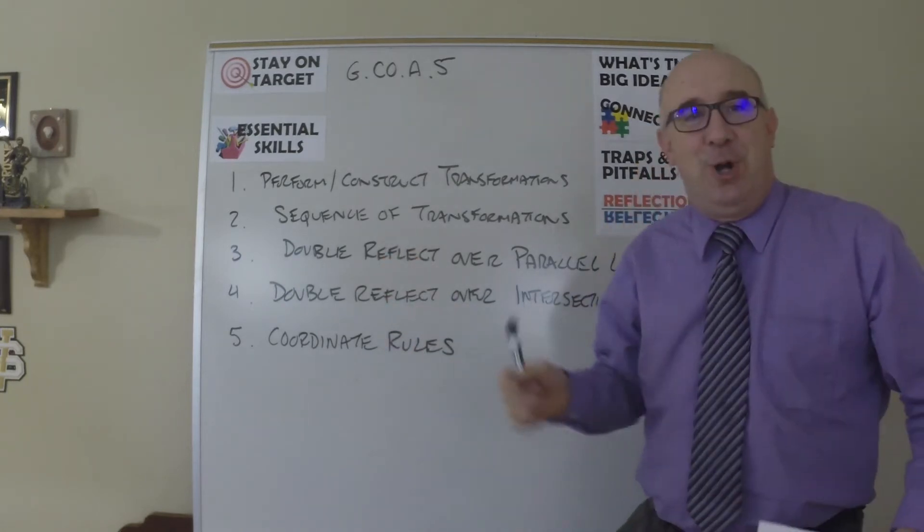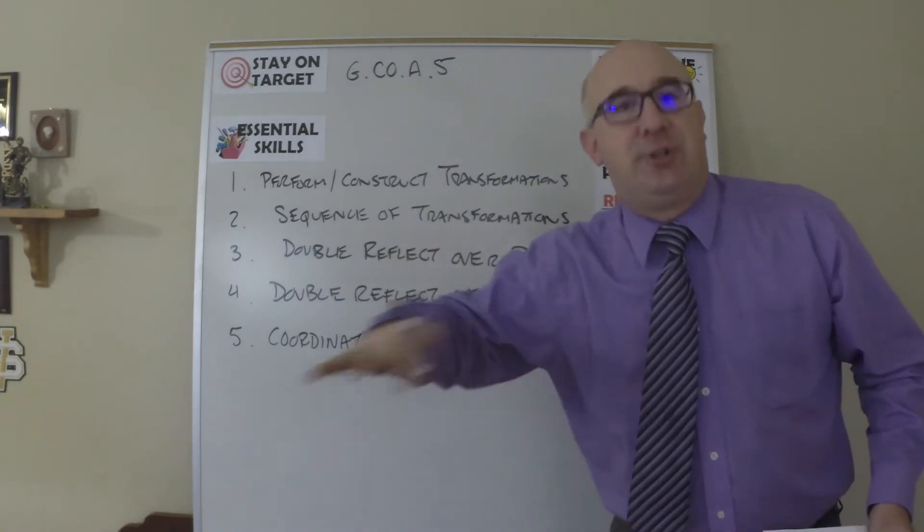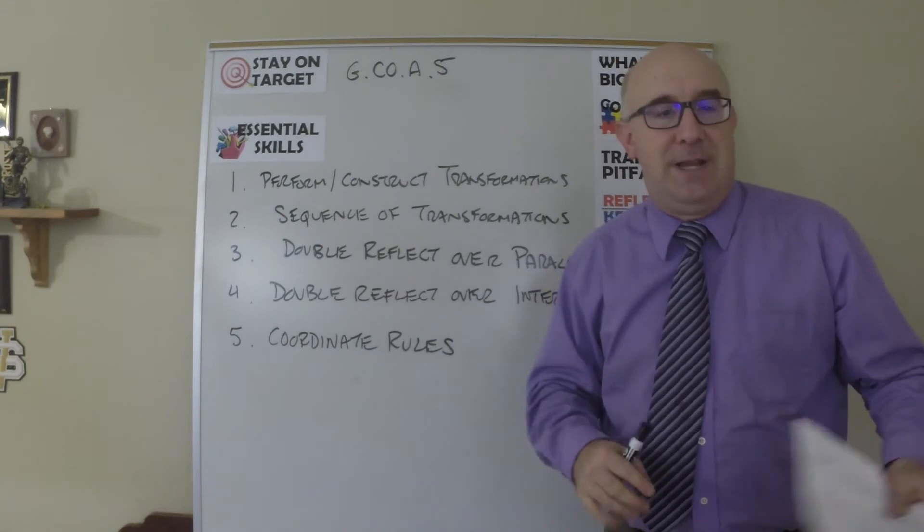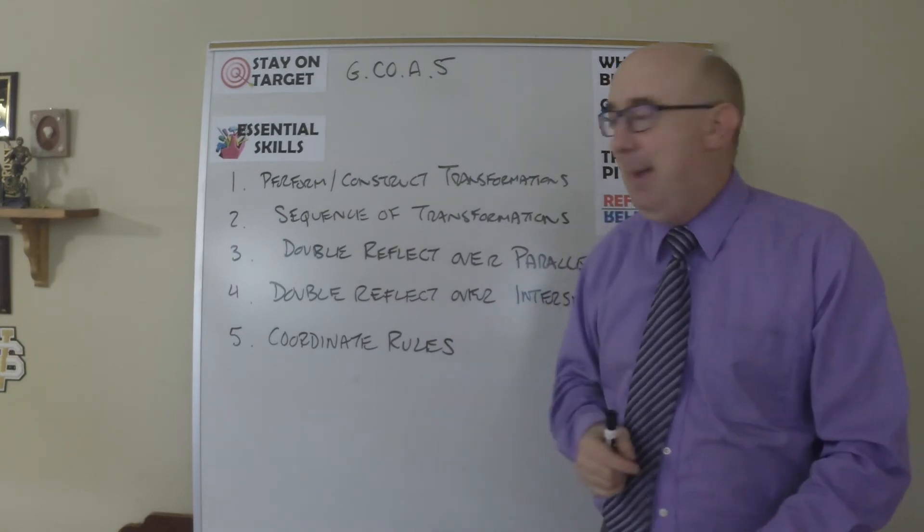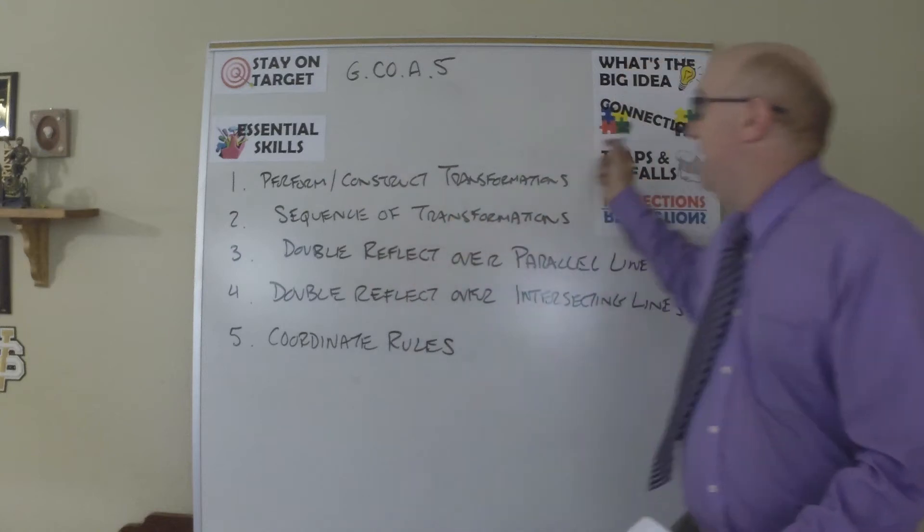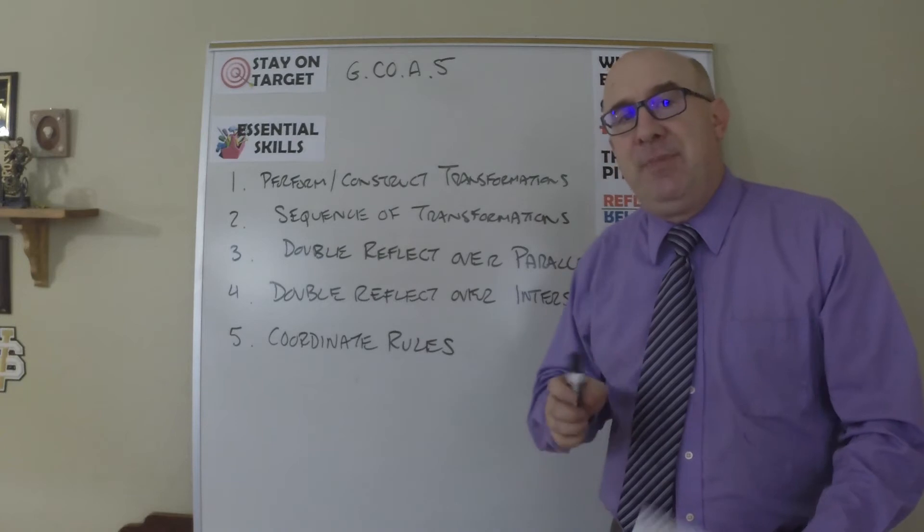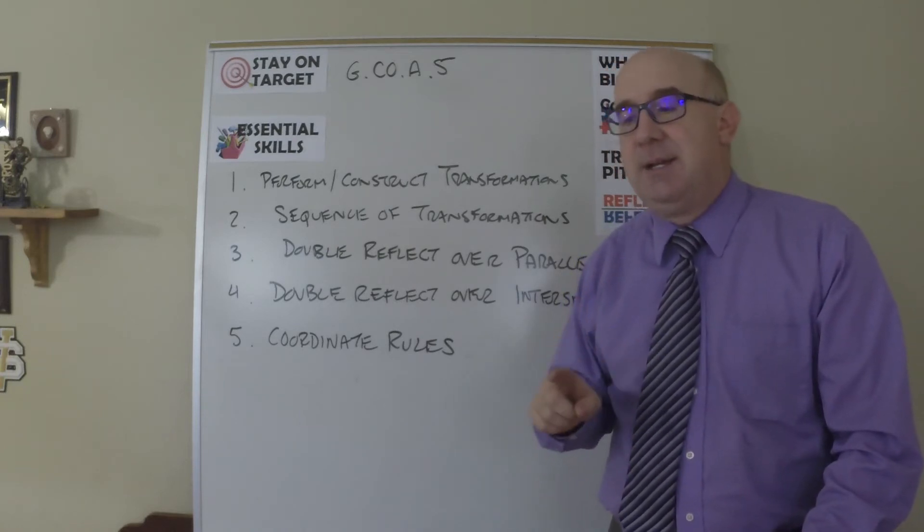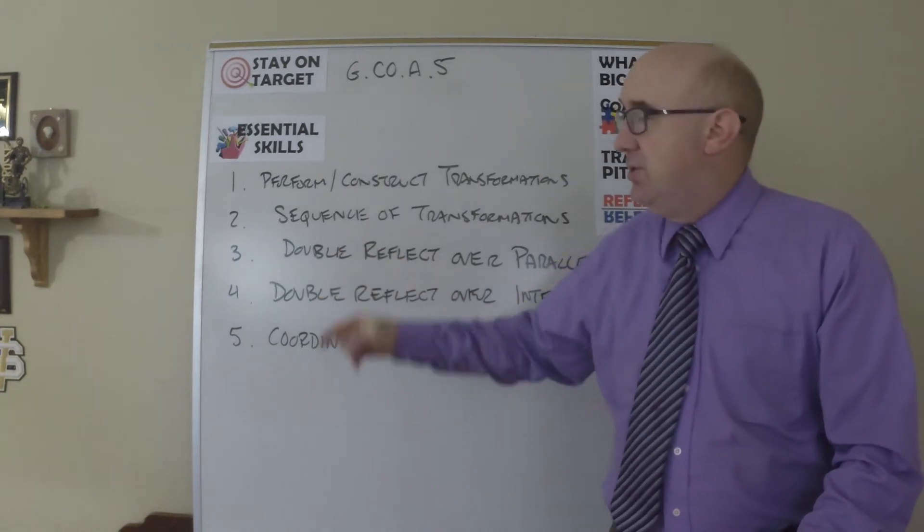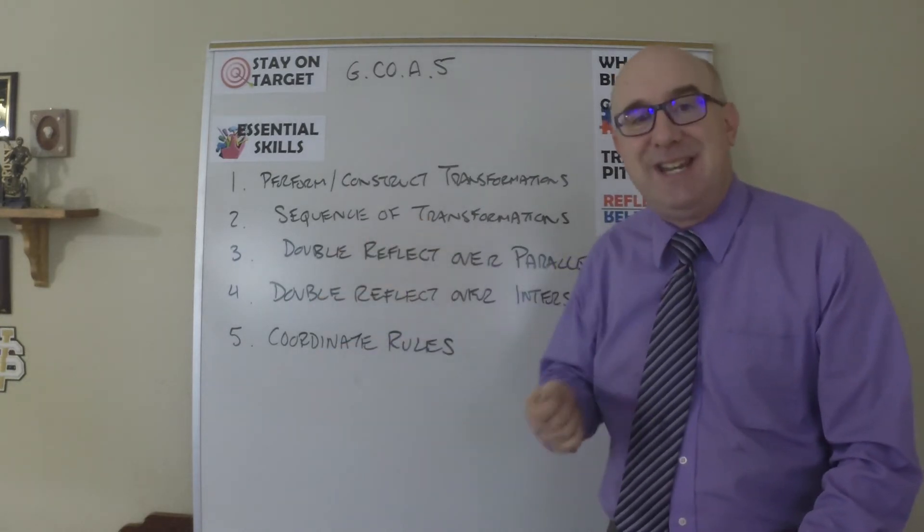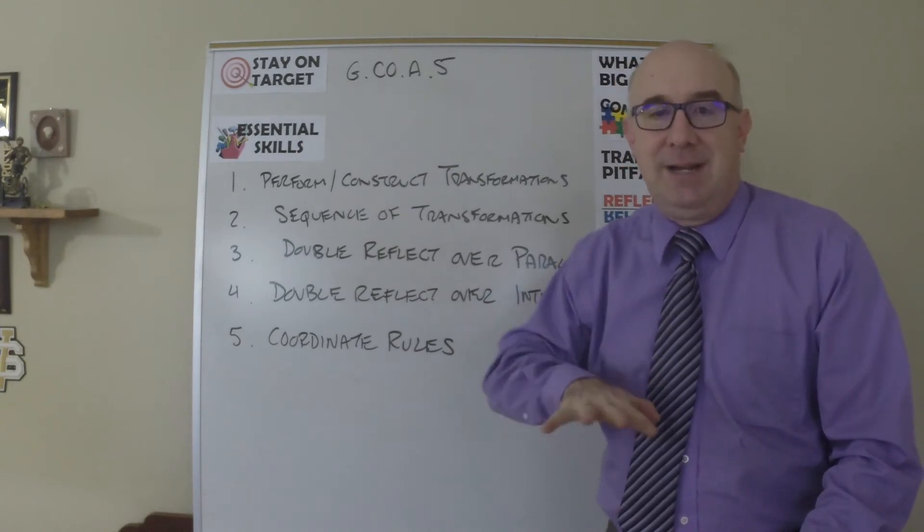We want to do a number of them in a row. So the idea is if we do maybe a reflection, then a translation, a rotation, and then a reflection to look at what happens to these things when that happens. This, of course, is leading to the huge idea of congruence. That soon we will define congruence as the mapping of one figure onto another using a single or sequence of isometric transformations. In other words, if I can take my shape and map it on yours, we are congruent.